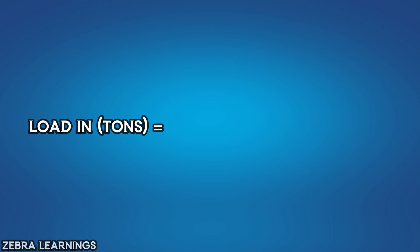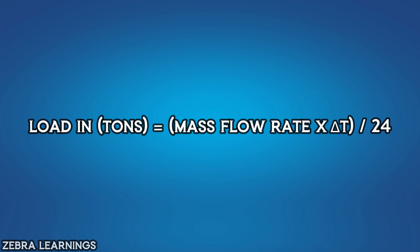Chiller load in tons equals mass flow rate multiply delta T divided by 24.